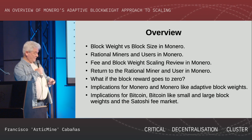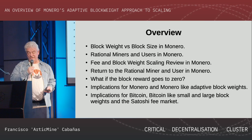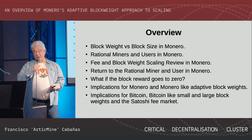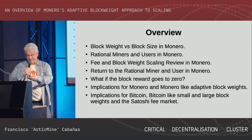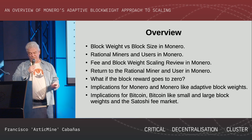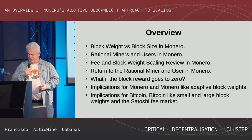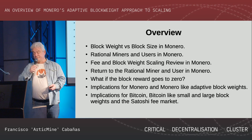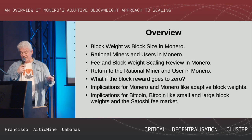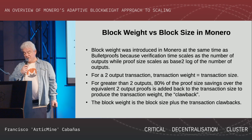This is an overview of the talk today. We're looking at block weight versus block size, rational miners and users, fee and block weight, return of the rational miner, scenarios for what happens when the block reward goes to zero — the elephant in the room for major coins — and implications for both Monero and Bitcoin, including the Satoshi fee market.